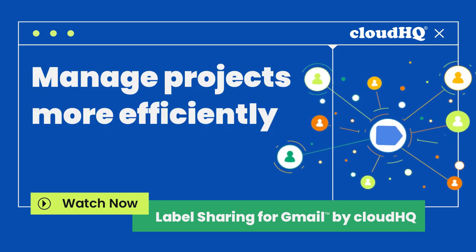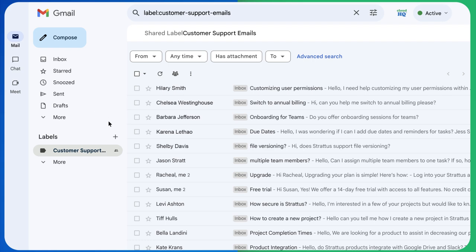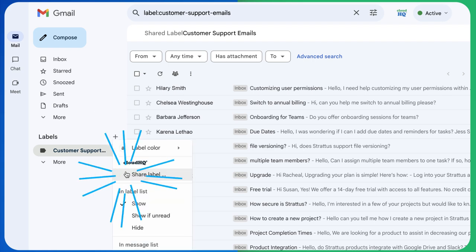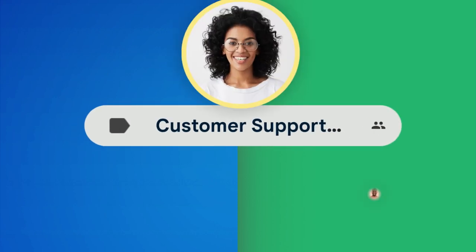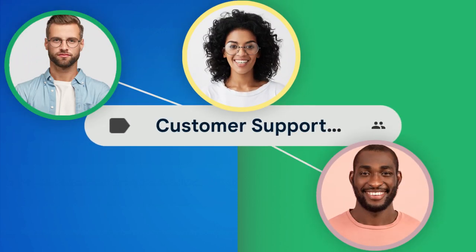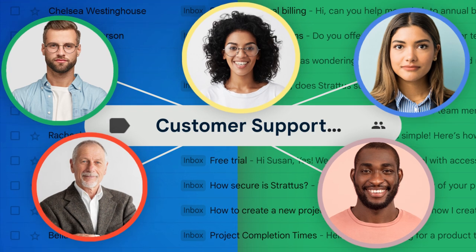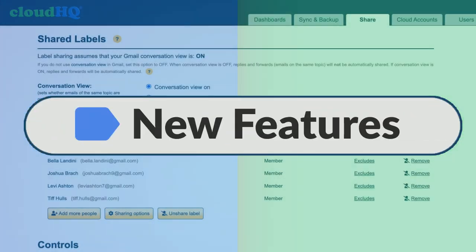Manage projects more efficiently with Label Sharing for Gmail by CloudHQ, the Gmail Chrome extension that allows you to share labels with your team, making it easier than ever to manage emails and improve team collaboration. Let's explore this tool's powerful new email management features.